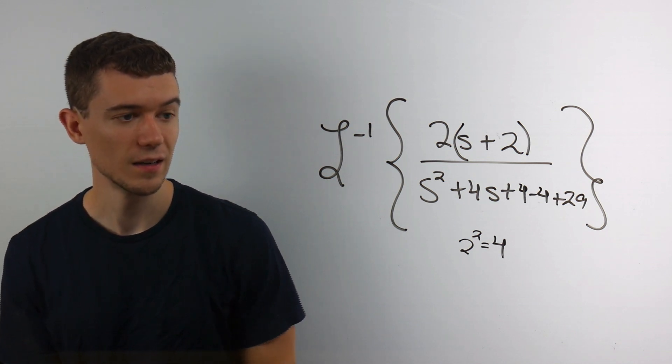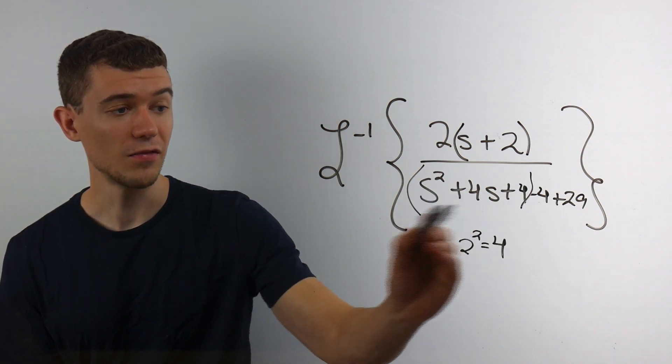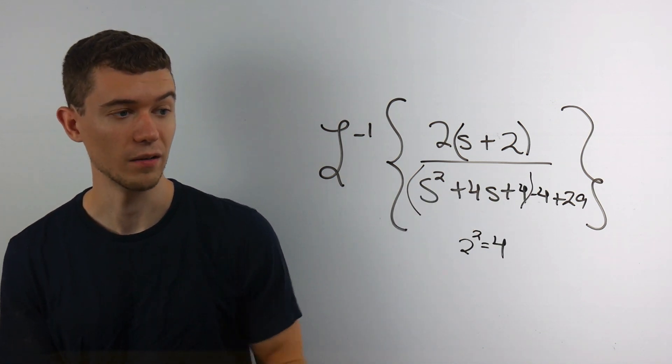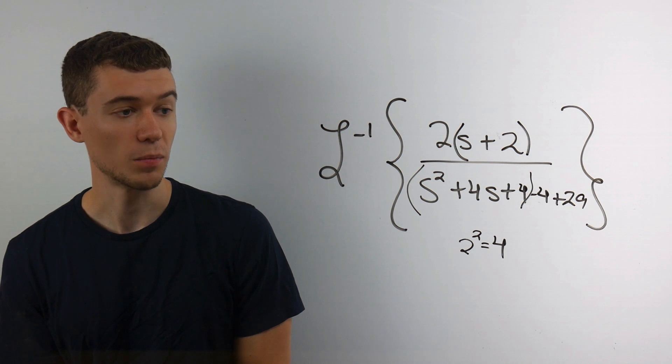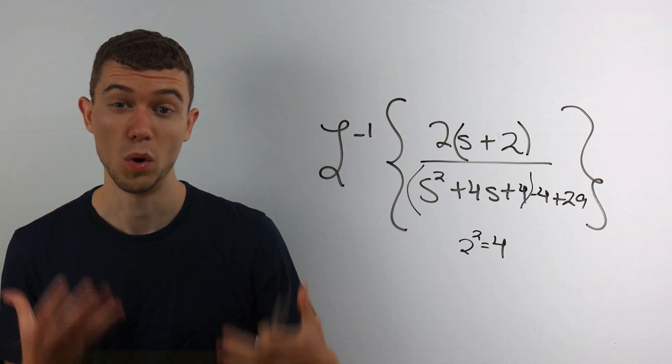And that's because when I group like this, this factors into a perfect square. This is s plus 2 times s plus 2, or s plus 2 quantity squared.